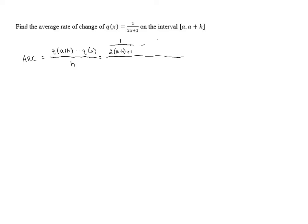Then we've got minus 1 over 2 times a plus 1 all over h. What I've done here is I have substituted a plus h in for x in the first one, and then I have substituted a in for x in the second one.